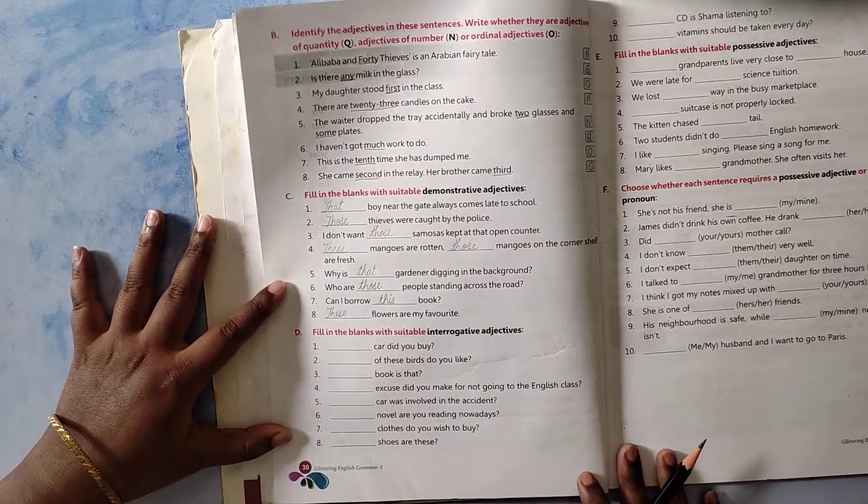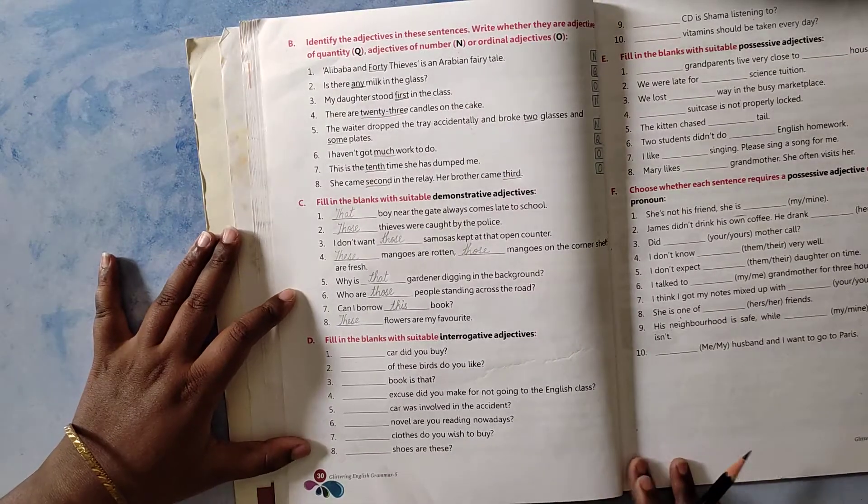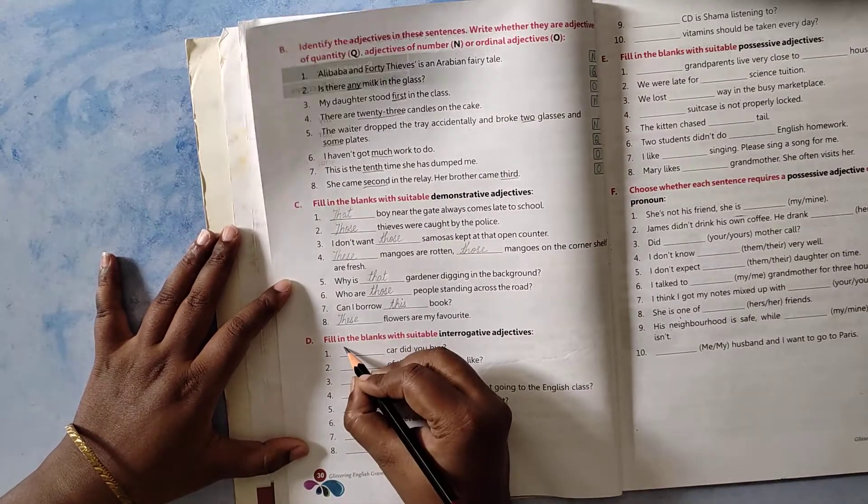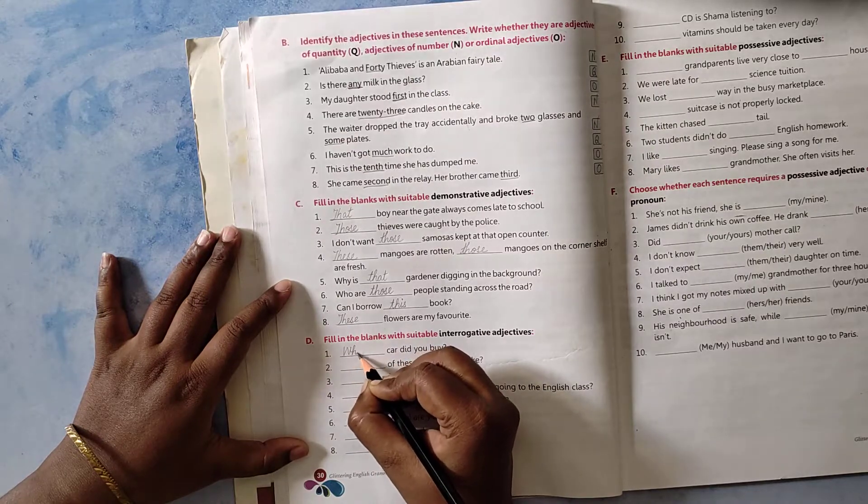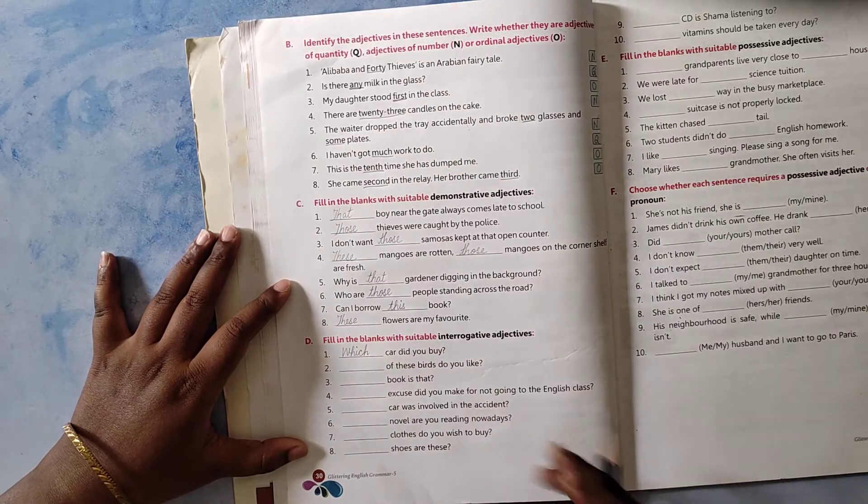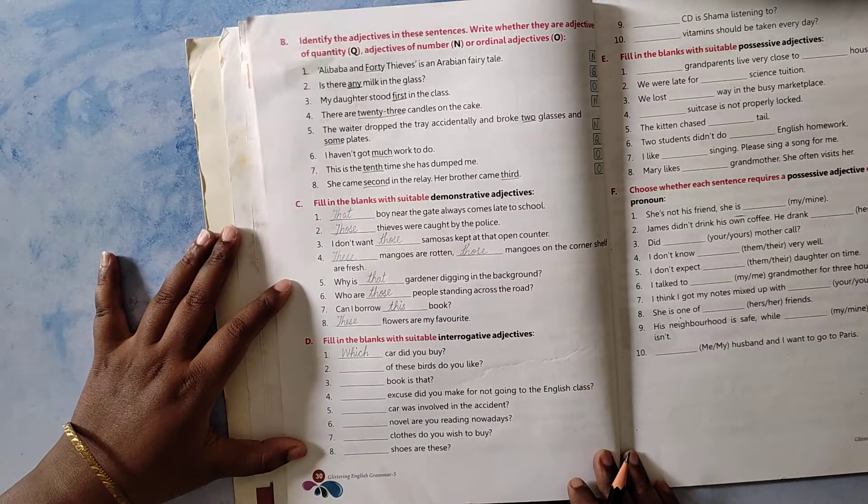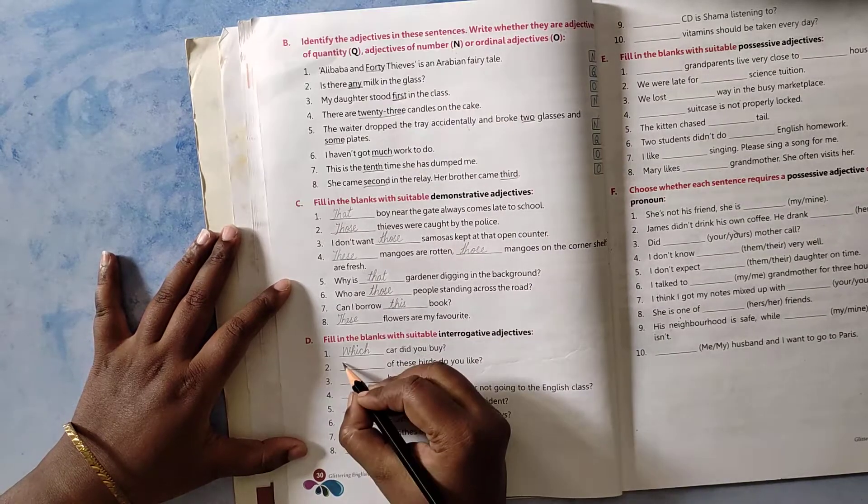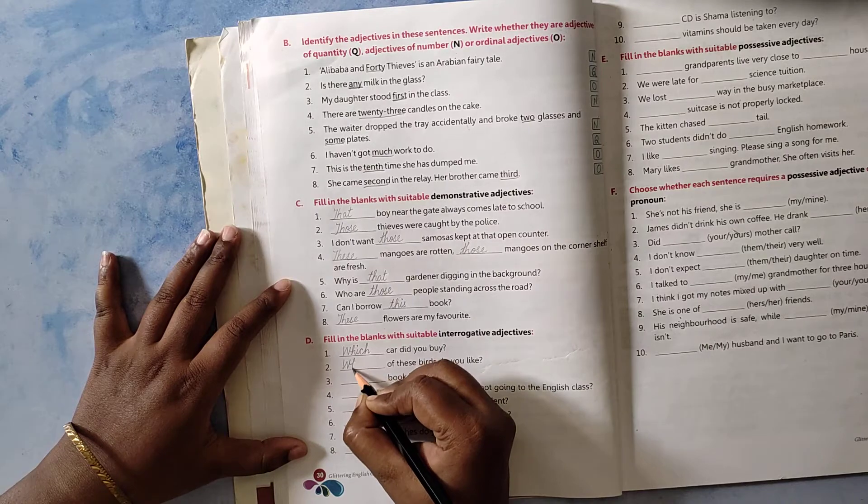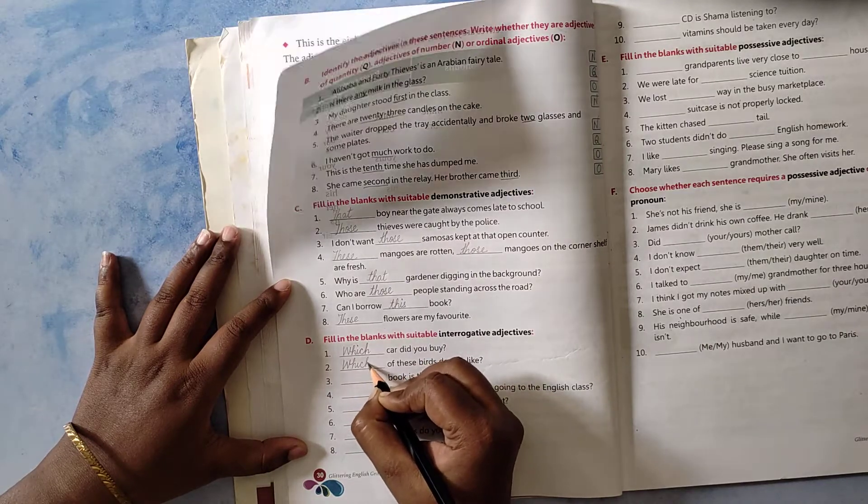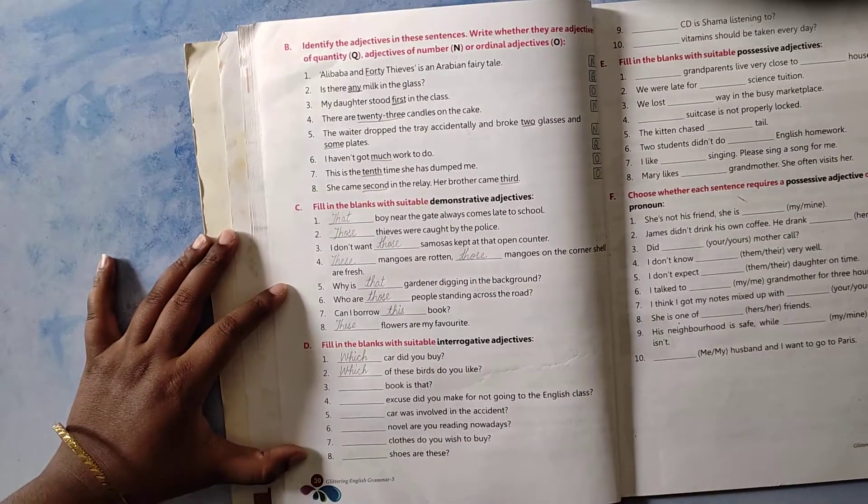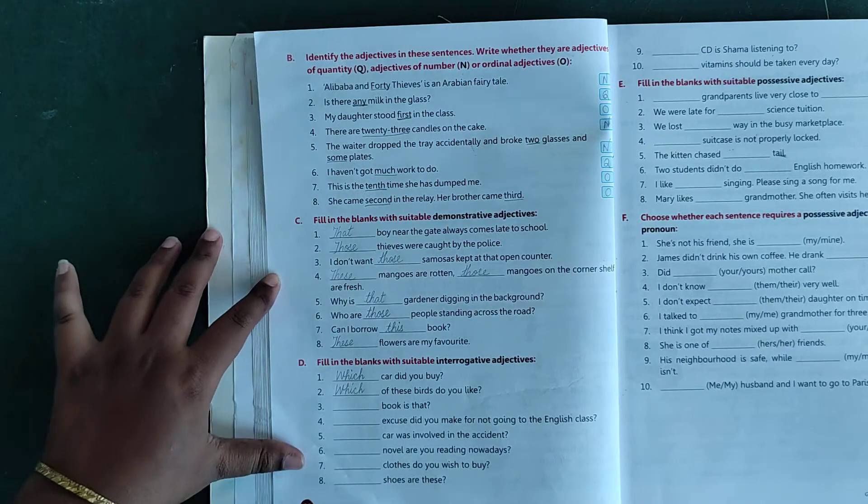Number 1: dash car did you buy? Which car, W-H-I-C-H, which. Number 2: dash of these words do you like? Which of, W-H-I-C-H, which.